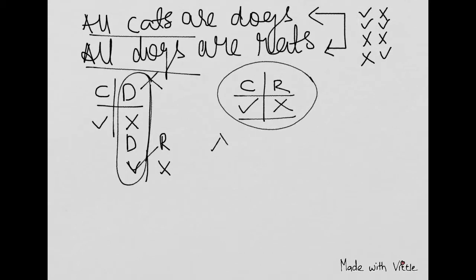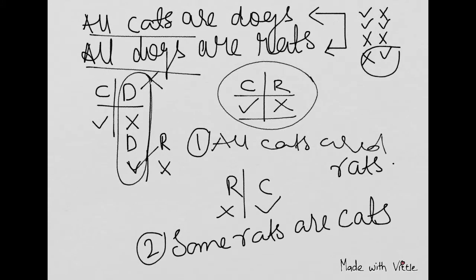So tick cross is all cats are rats. We can now reverse it as I have explained. So we will get cross tick, we will get some rats are cats.